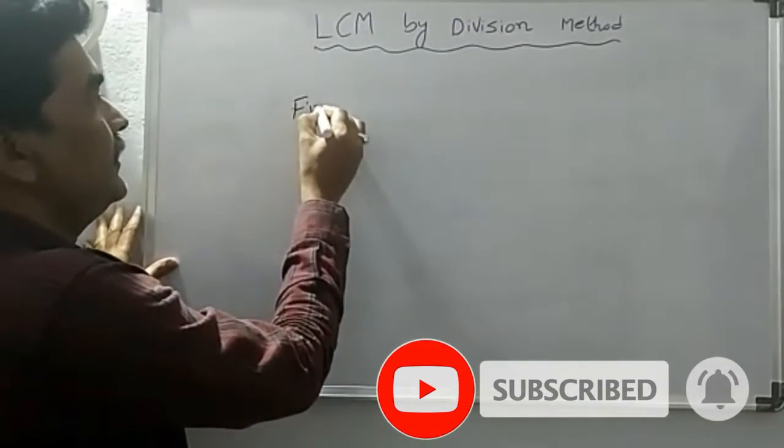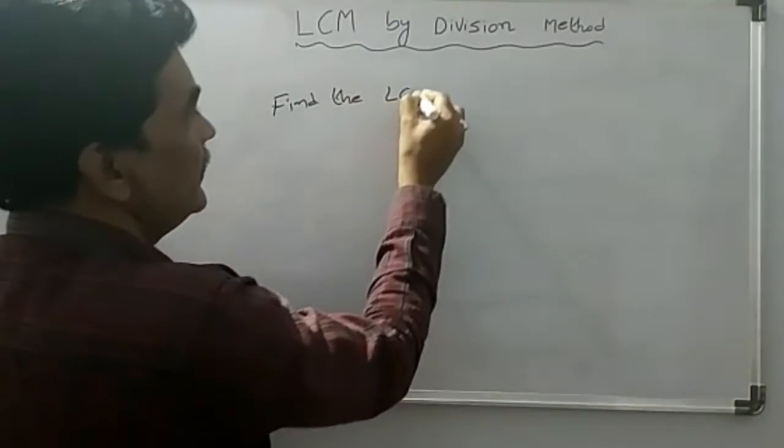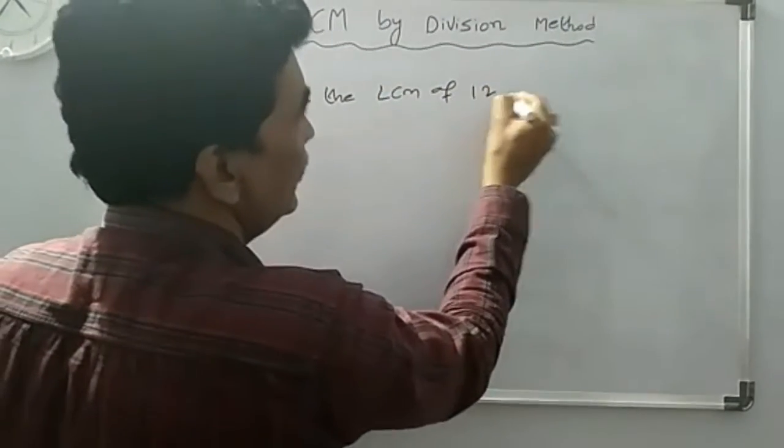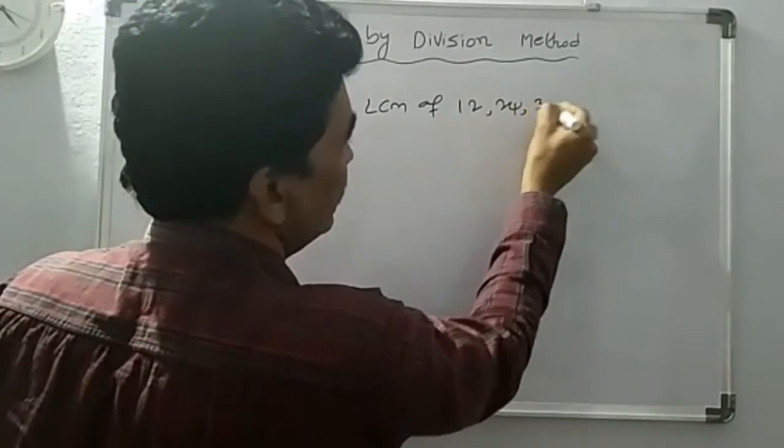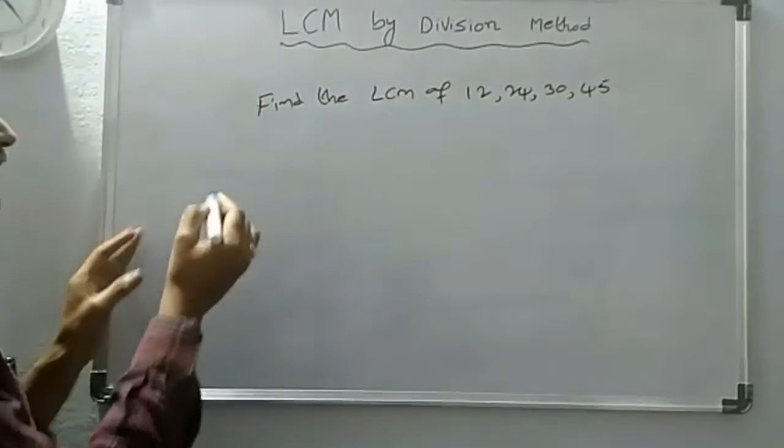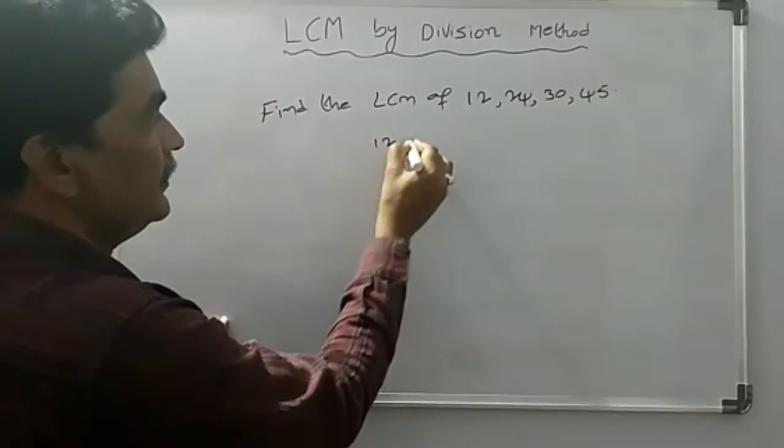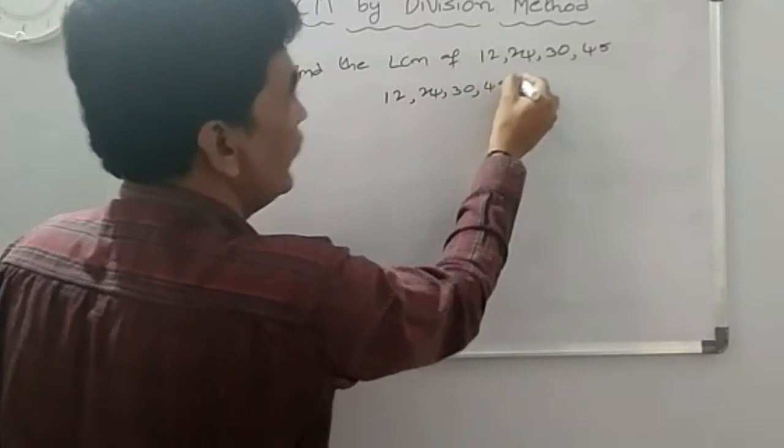Find the LCM of 12, 24, 30, and 45. First, we will write 12, 24, 30, 45.